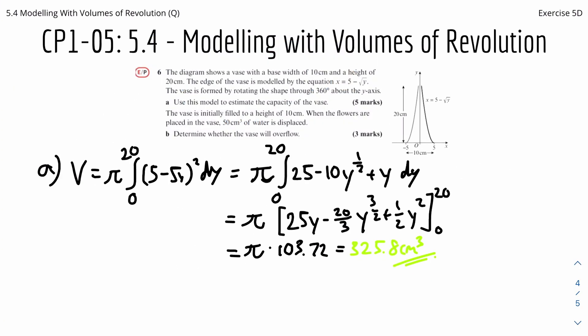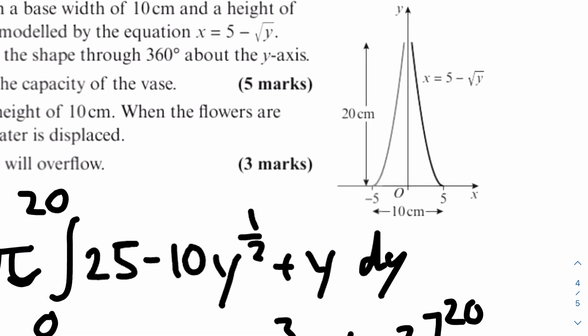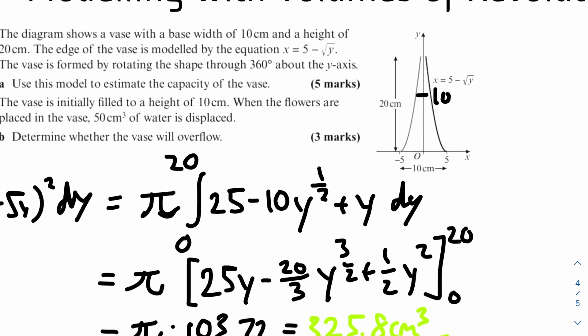For part B, the vase is initially filled to a height of 10 cm. When flowers are placed in the vase, 50 cm cubed of water is displaced. We need to determine whether the vase will overflow. We find the volume corresponding to a height of 10 cm, then add 50 cm cubed to see whether it exceeds the capacity of the vase.